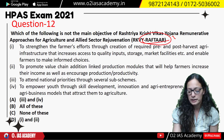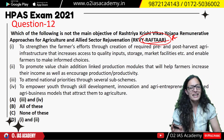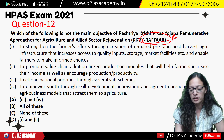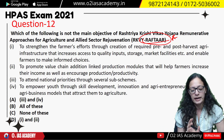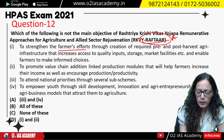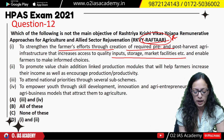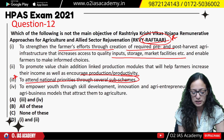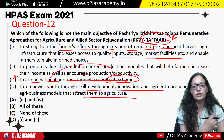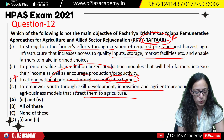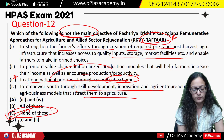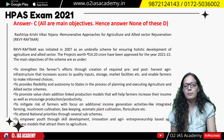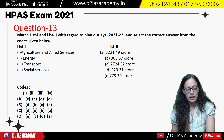Question 12 was about the Raftaar scheme's main objectives. Usually in such questions, one statement stands out as different. RAFTAAR stands for Krishi Vikas Yojana — Remunerative Approaches for Agriculture and Allied sector Rejuvenation. All statements were objectives: strengthening farmers, providing storage and market facilities, increasing production, utilizing sub-scheme benefits, and skill development, innovation and agriculture entrepreneurship. The answer was 'none of the above' — meaning all stated objectives are correct.